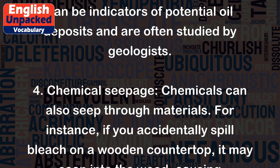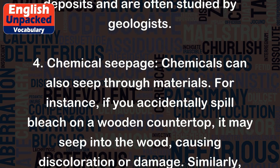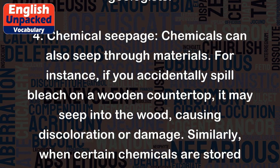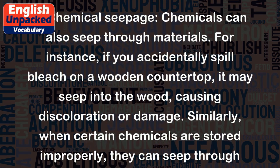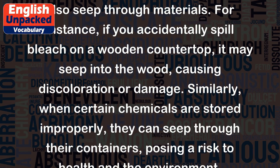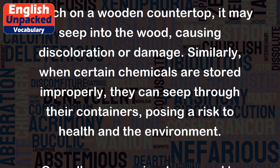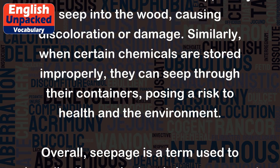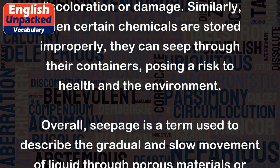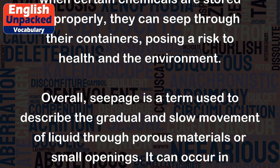4. Chemical seepage: Chemicals can also seep through materials. For instance, if you accidentally spill bleach on a wooden countertop, it may seep into the wood, causing discoloration or damage. Similarly, when certain chemicals are stored improperly, they can seep through their containers, posing a risk to health and the environment.